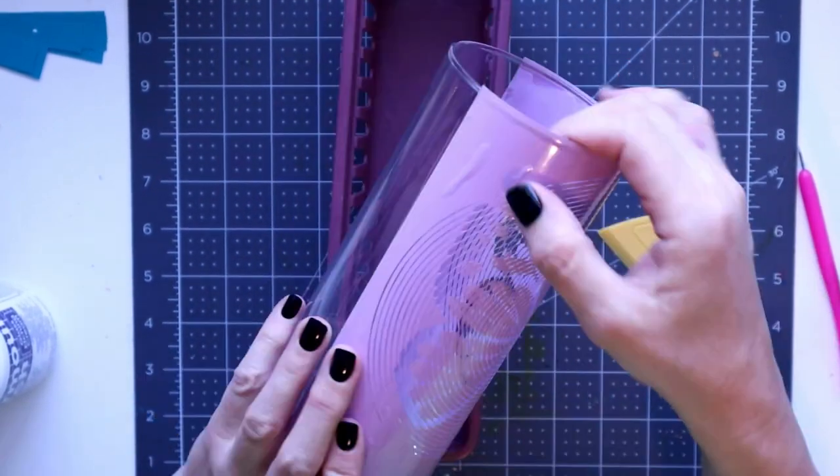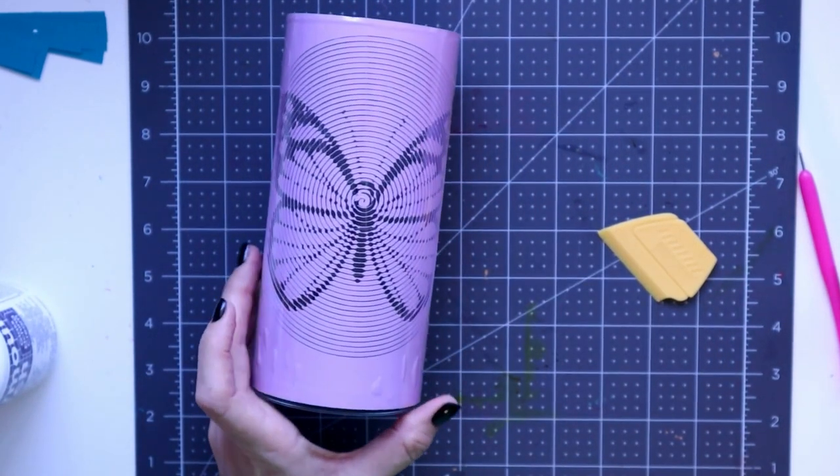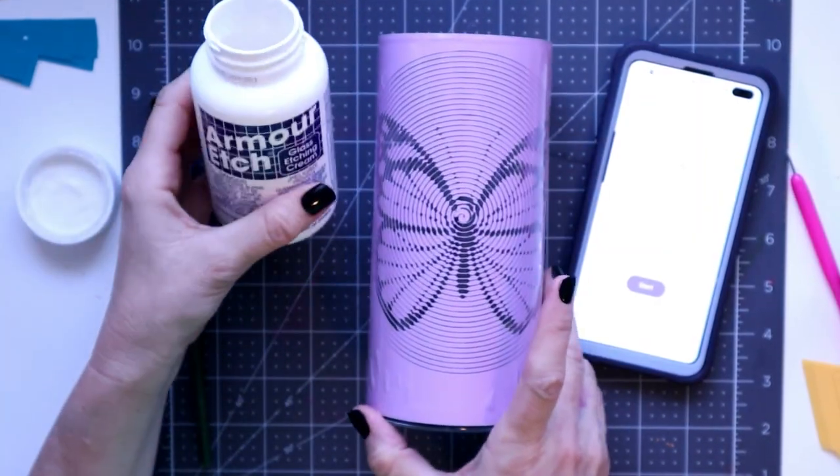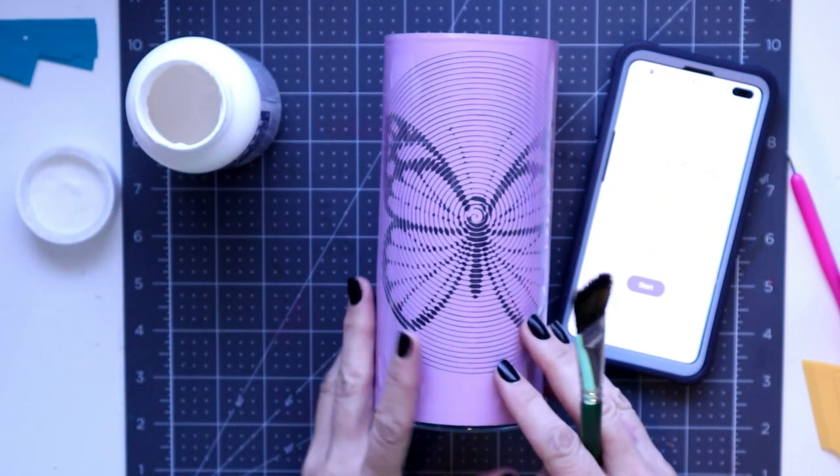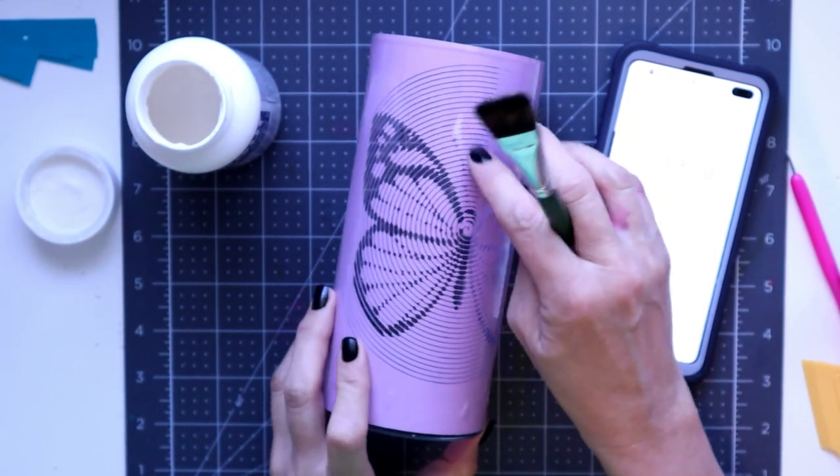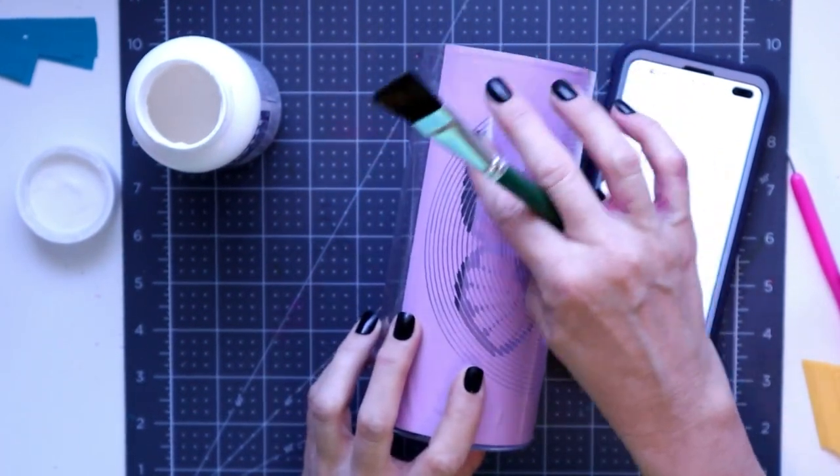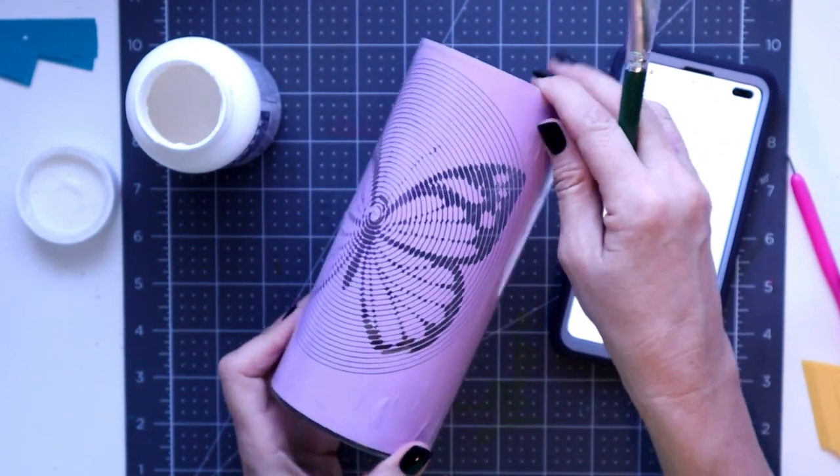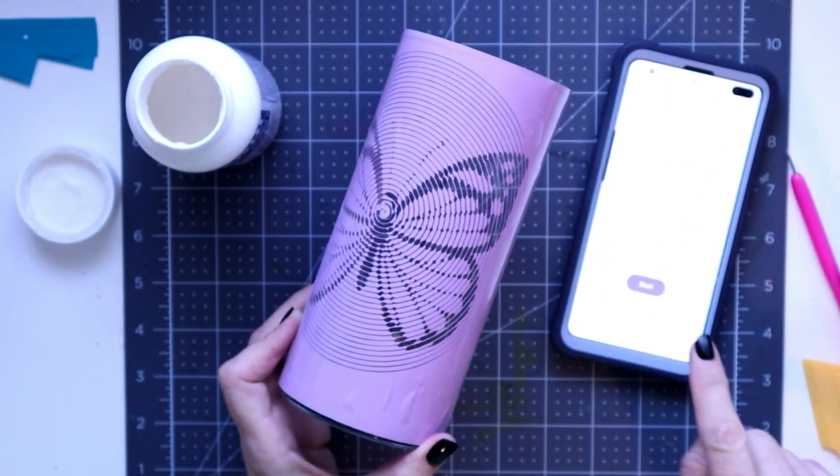Now the next step is to apply the Armor Etch. I have the Armor Etch and then I will start applying this to the vase. I'm working at the whole area where there is no vinyl and it's done for three minutes.